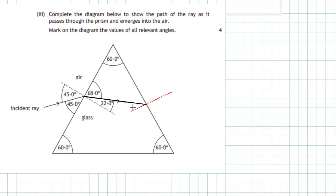To find where the emergent ray goes, we have to chase the angles. Can you see a triangle formed from the ray path? If we add up all the angles and subtract from 180, we get the missing angle as 52 degrees. You can check: 52 and 68 is 120, plus the top angle of 60, gives us 180.